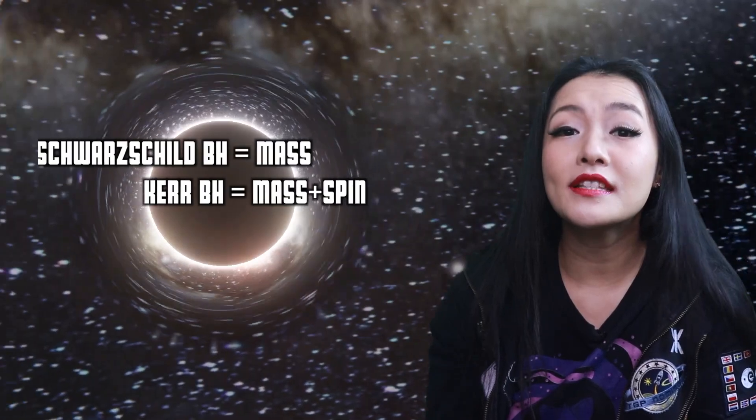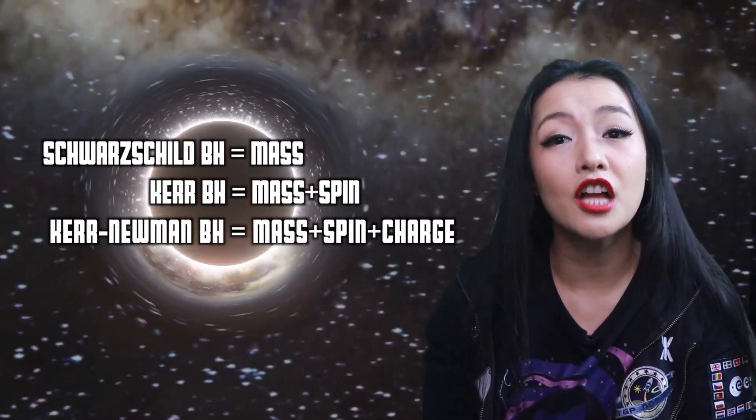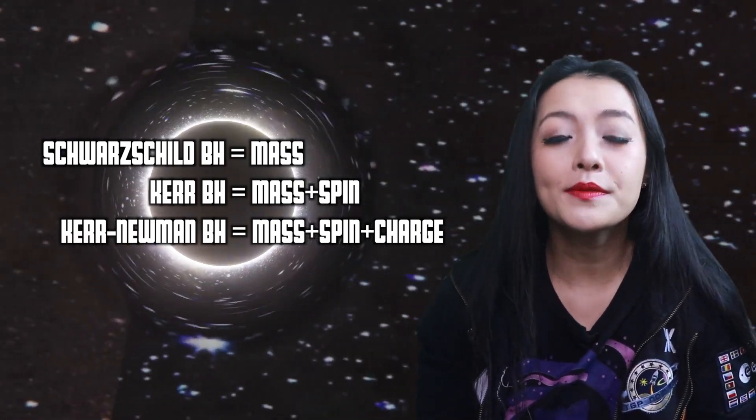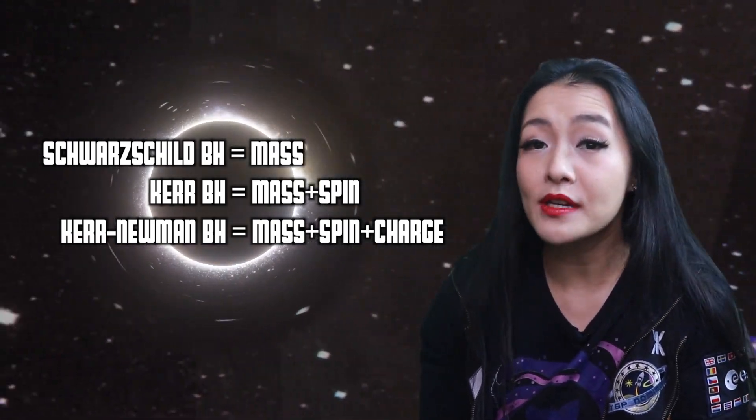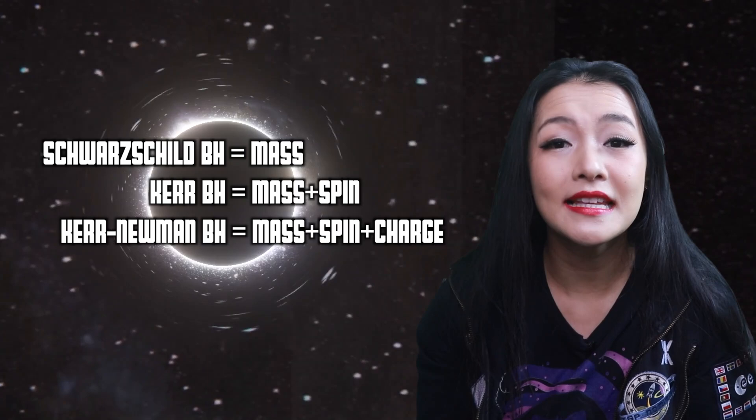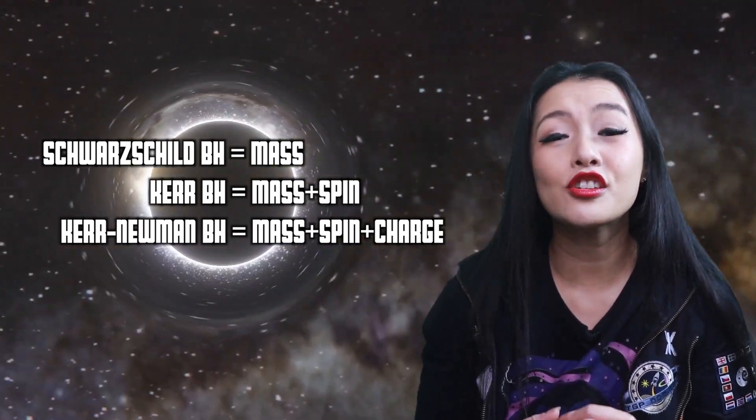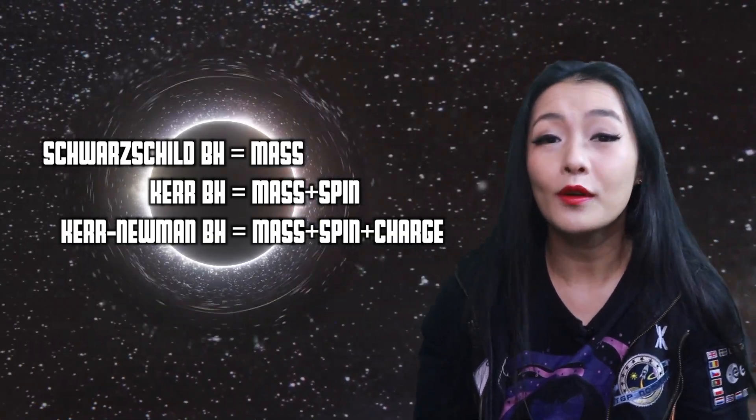The Kerr-Newman solution incorporates the electric charge aspect and is the most general solution of black holes. Observations from gravitational wave measurements of binary black hole mergers and direct imaging of supermassive black holes have shown extremely good agreement with these models.